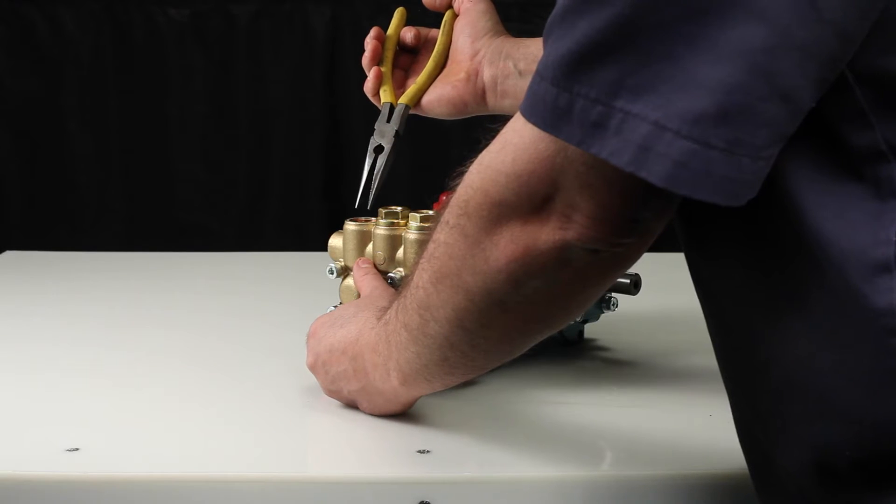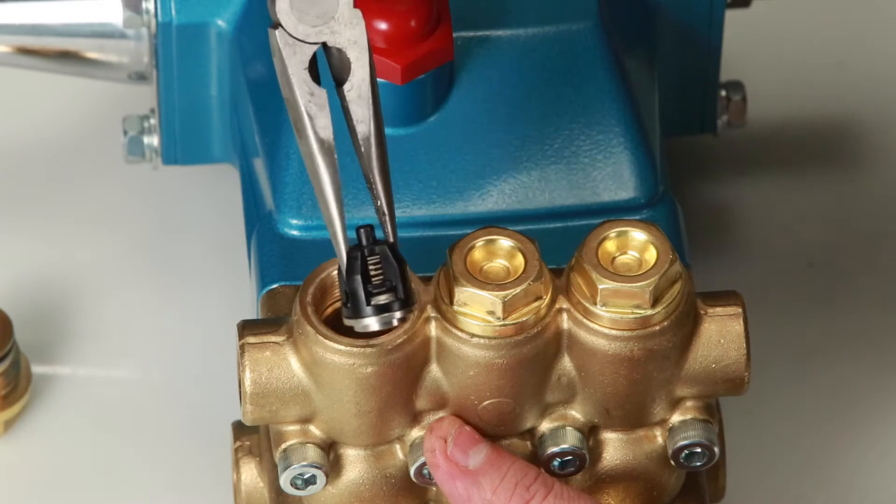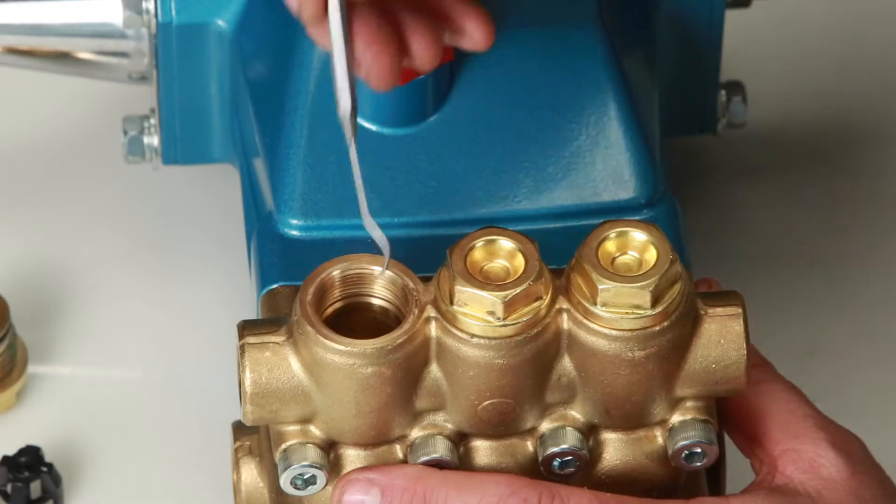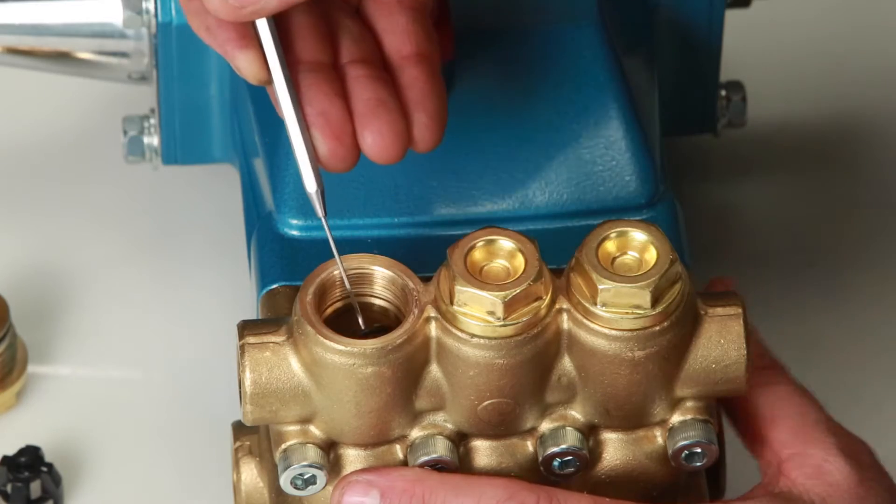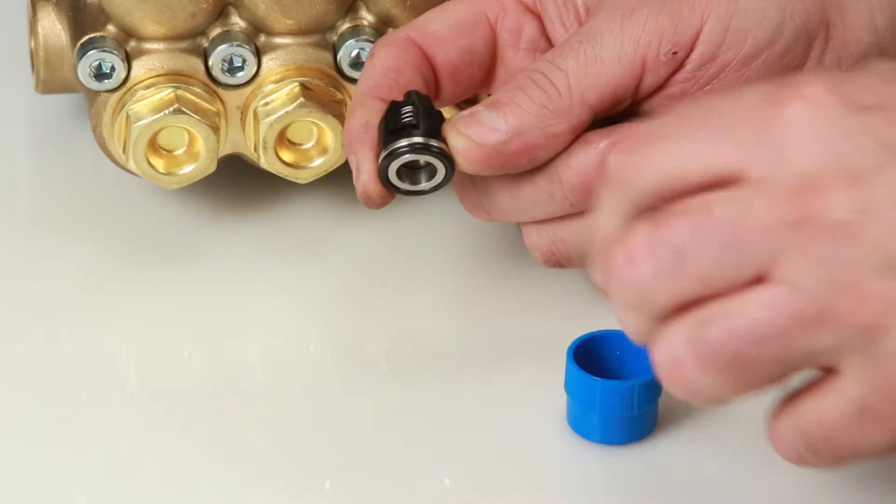To remove the valve assembly, use needle-nose pliers grasping the top of the spring retainer. Give a small twist while pulling away from the manifold to remove. When removing the valve assembly, the O-ring may remain in the manifold. Using a small pick or screwdriver, reach into the manifold to remove.